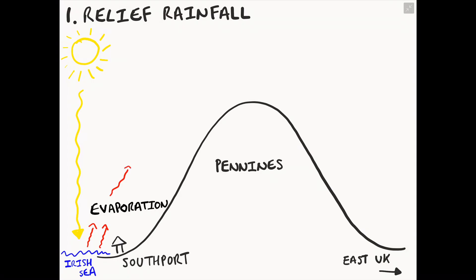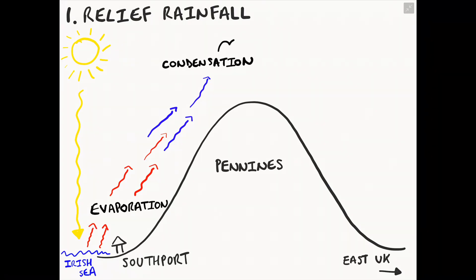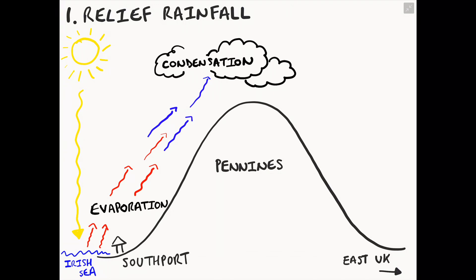As the warm air begins to rise in the atmosphere, being forced to rise due to the shape of the land, it will begin to cool. As the water cools, it begins to condense in the atmosphere, forming water vapour droplets, which will join together, forming clouds through the process of condensation.